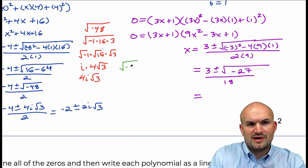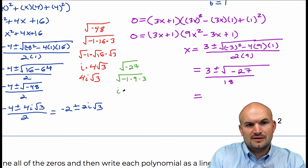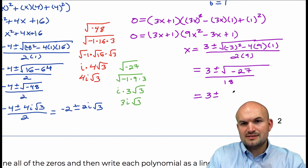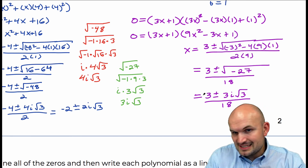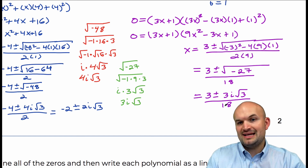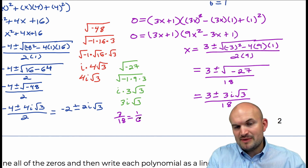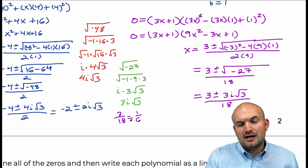We can rewrite the square root of negative 27 as negative 1 times 9 times 3, giving us i times the square root of 9 — which is 3 — times the square root of 3: so 3i√3. Therefore we have 3 plus or minus 3i√3 all over 18. Now 3 does evenly divide into 18, so we can reduce: 3 over 18 simplifies to 1 over 6. So dividing top and bottom by 3, we get our simplified form.